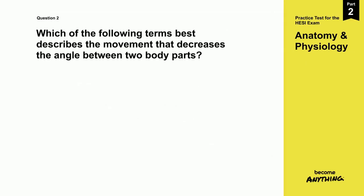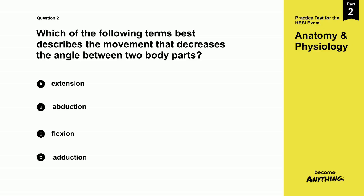Question 2. Which of the following terms best describes the movement that decreases the angle between two body parts? A. Extension. B. Abduction. C. Flexion. D. Adduction.